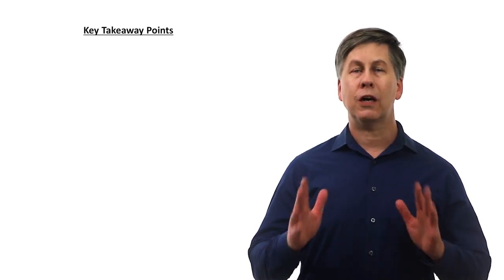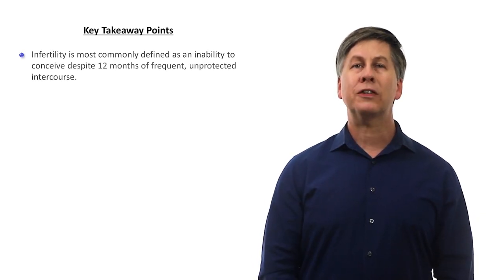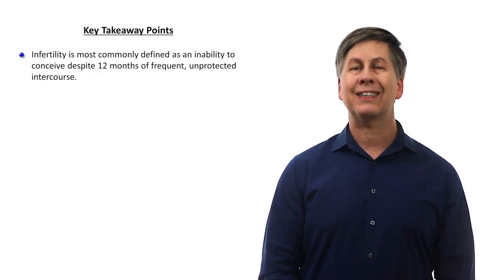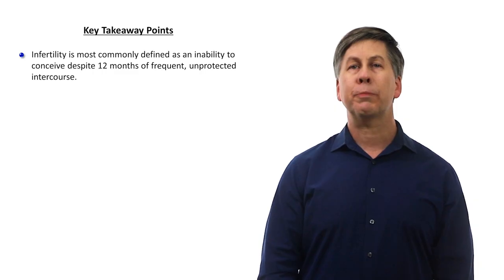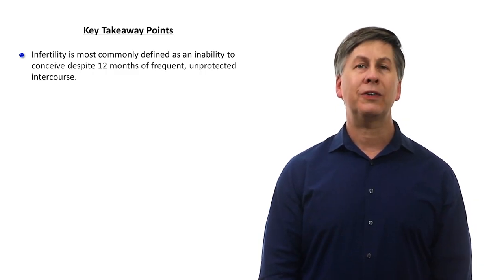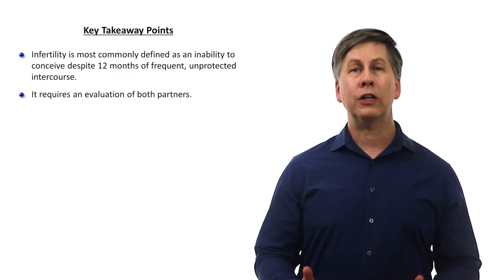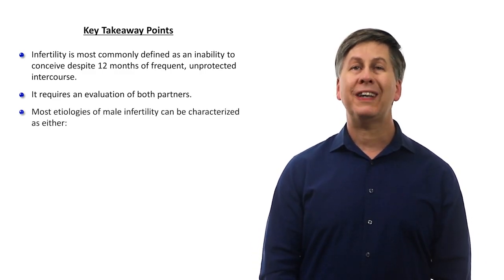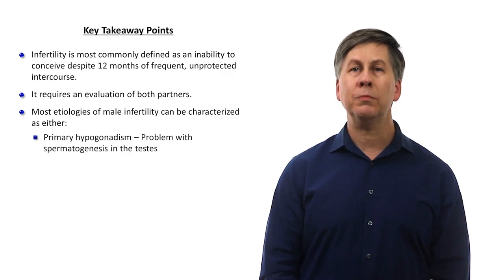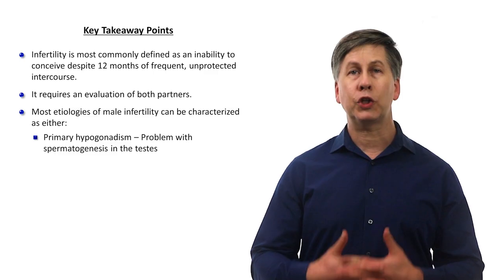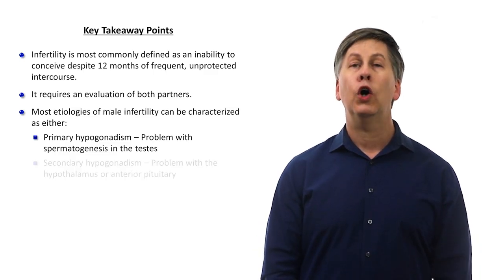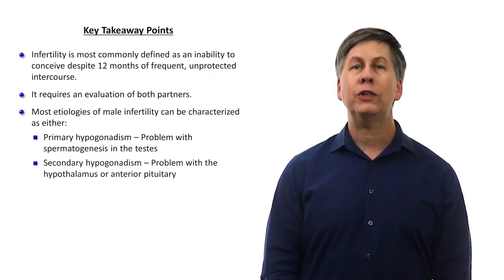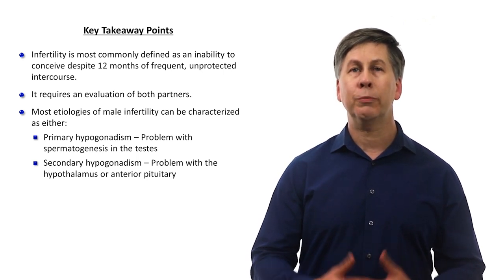The key takeaway points of this video. Infertility is most commonly defined as an inability to conceive despite 12 months of frequent unprotected intercourse. It requires an evaluation of both partners. Most etiologies of male infertility can be characterized as either primary hypogonadism, which includes problems with spermatogenesis in the testes, or secondary hypogonadism, which includes problems with the hypothalamus or pituitary's regulation of sex hormones.